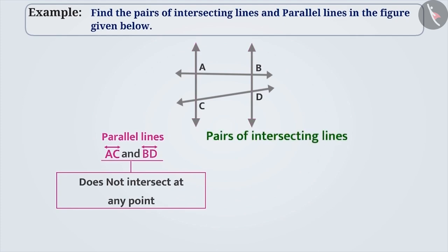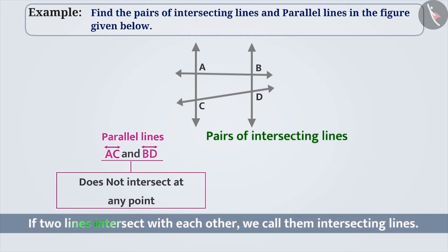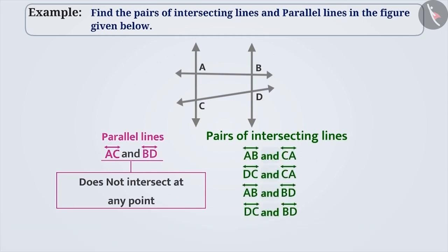Now let us find the pairs of intersecting lines in the given figure. If two lines intersect, then we call them intersecting lines. The following are the pairs of intersecting lines in the given figure: Line AB and line CA — they are intersecting lines because they intersect at point A. Line DC and line CA — they are intersecting lines because they intersect at point C. Line AB and line BD — they are intersecting lines because they intersect at point B. Line DC and line BD — they are lines of intersection because they intersect at point D.